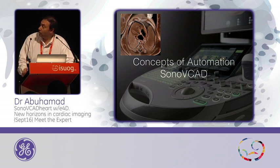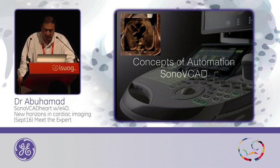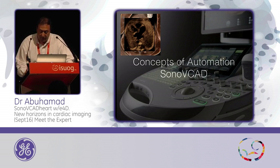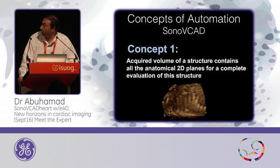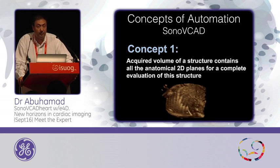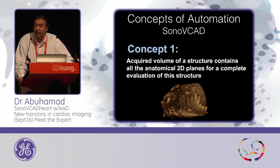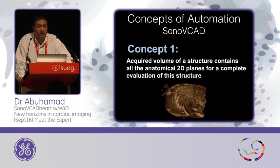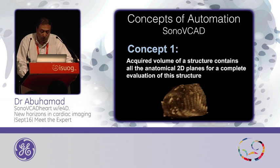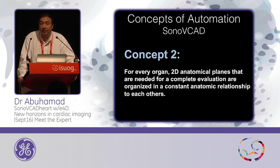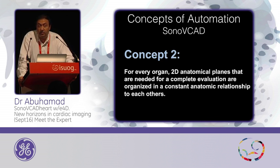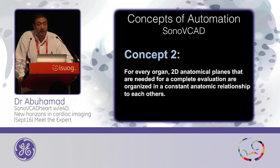With regards to the concepts of automation with Sono V-CAD: once 3D ultrasound became a reality several years back, it was quickly realized that when you acquire a volume of a structure such as the fetal chest and upper abdomen, everything you need to make a comprehensive evaluation of the heart is contained within this volume. It was also realized early on that for every organ, such as the fetal heart, all the 2D anatomical planes needed for comprehensive evaluation are contained within this volume. Not only that, but these planes are organized in a constant anatomic relationship to each other.